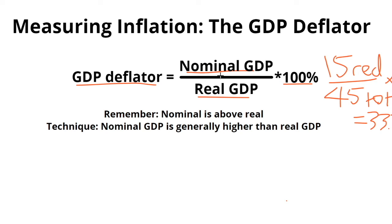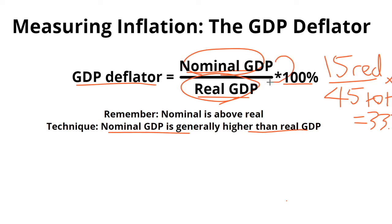To remember that it's nominal above real, here's my own technique. It is generally known that nominal GDP is higher than real GDP, and so whenever you use this formula, know that nominal goes above real. Thus, anytime you remember that, you won't get stuck on a GDP deflator problem on your test.